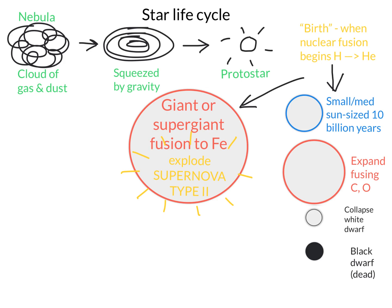There are two final paths depending on the mass of the star. Stars about 10 times the size of the sun will collapse down to become a neutron star. These are called neutron stars because the positive protons and negative electrons in the atoms are compressed so tightly they actually become neutrons. This star is literally just a big bunch of neutrons — very small and very dense, about the size of a city as opposed to a planet or a star. Some of these neutron stars spin very quickly and are called pulsars.